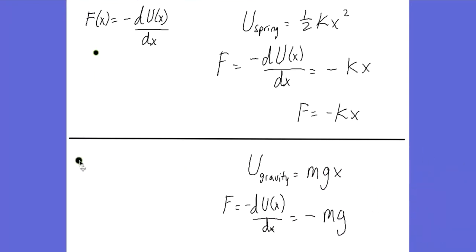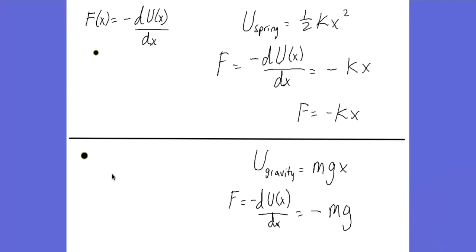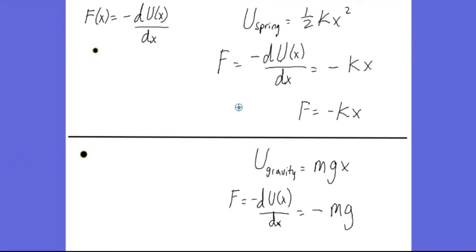Let's try it again using gravitational potential energy. If X represents vertical displacement or height, then gravitational potential energy equals MgX. The derivative with respect to X is just Mg, and with the negative sign, the force equals negative Mg — which we recognize as the force of gravity, our weight Mg, in the negative downward direction.